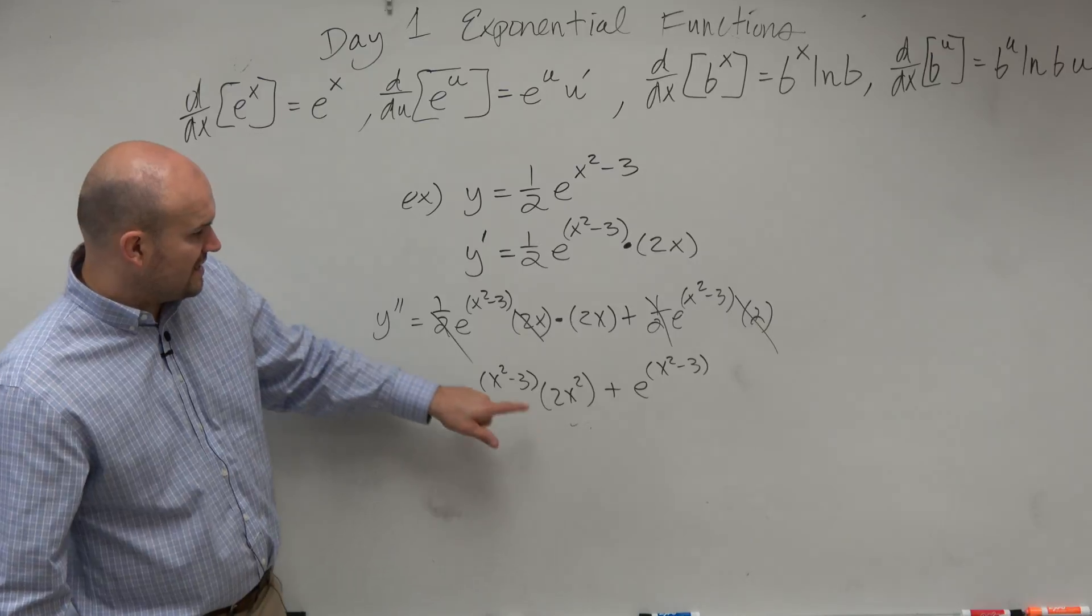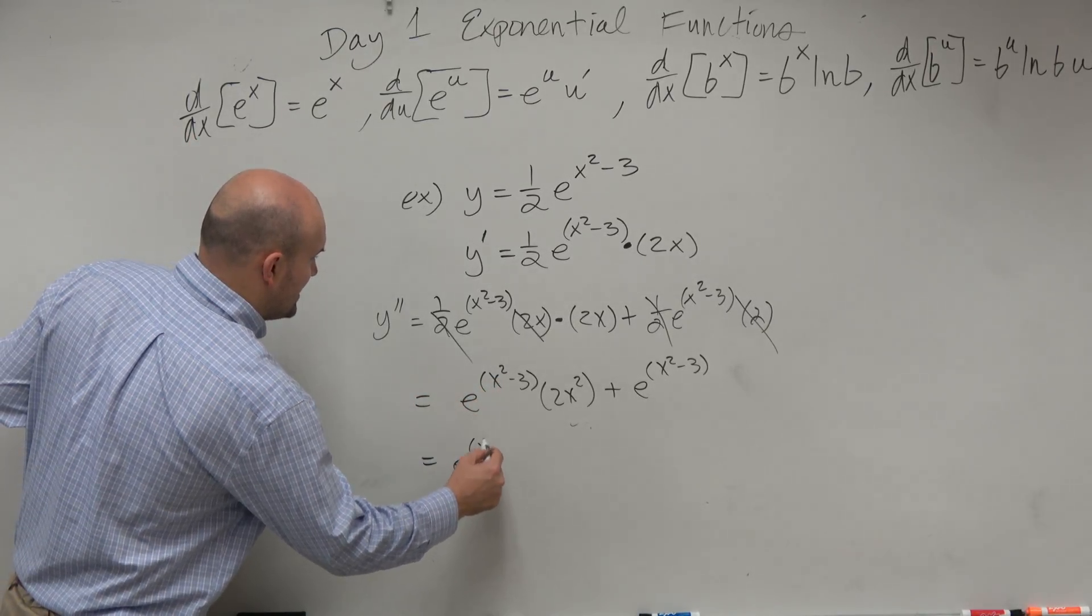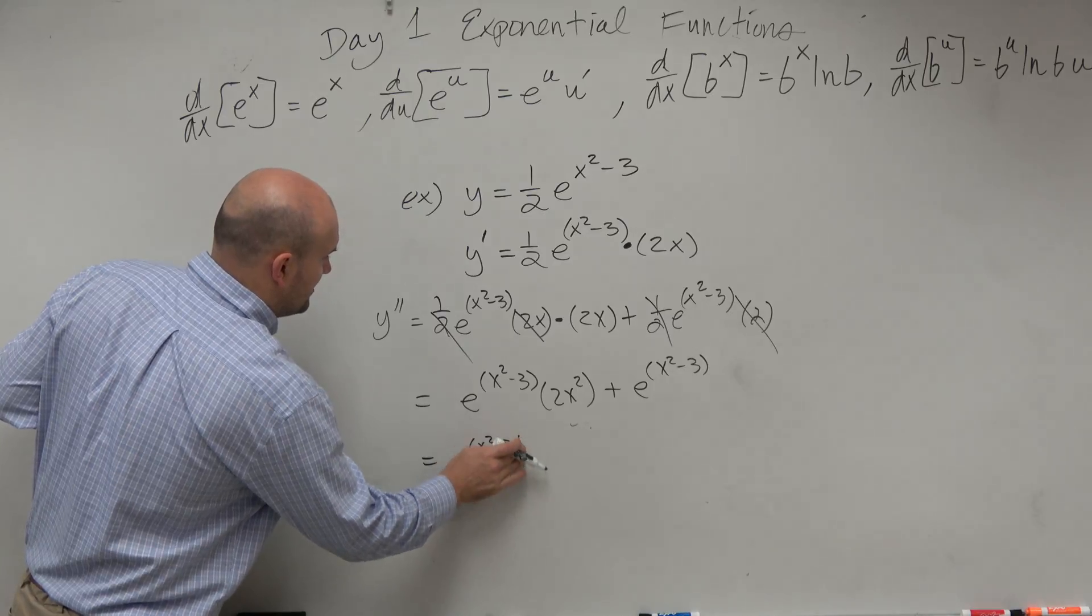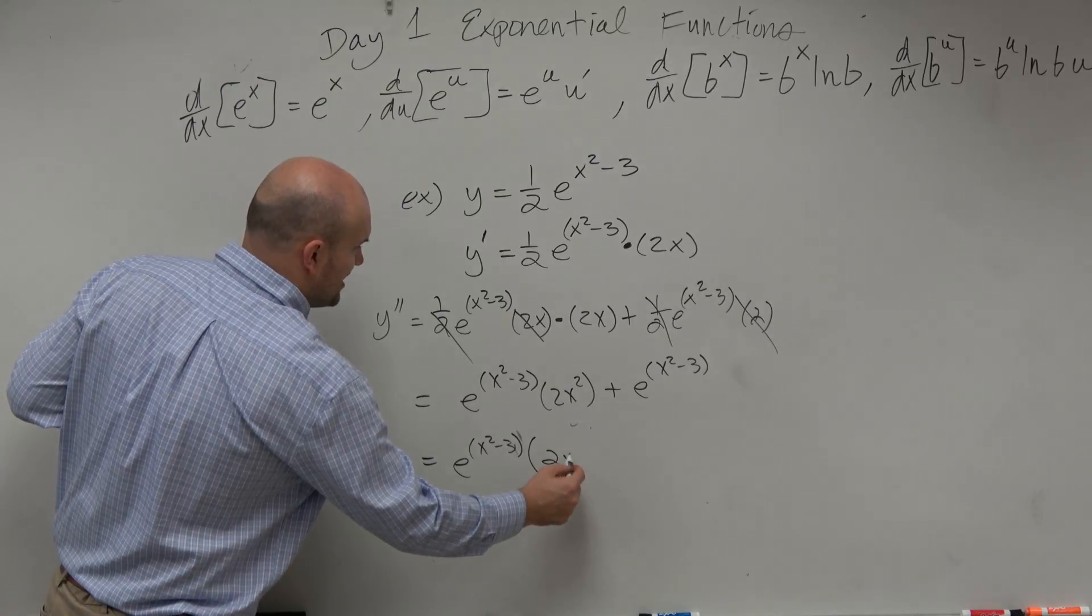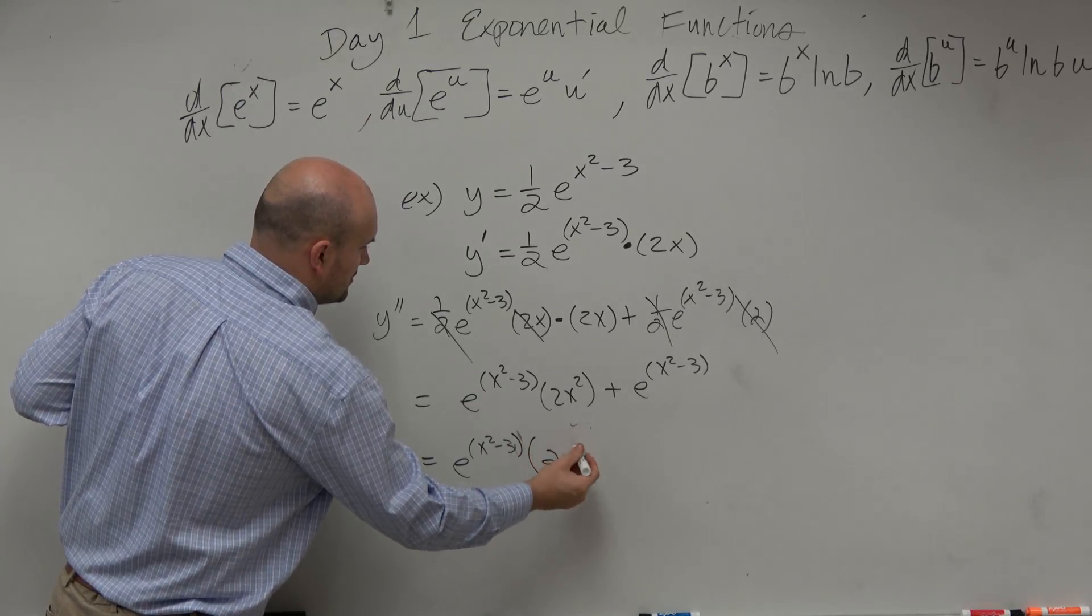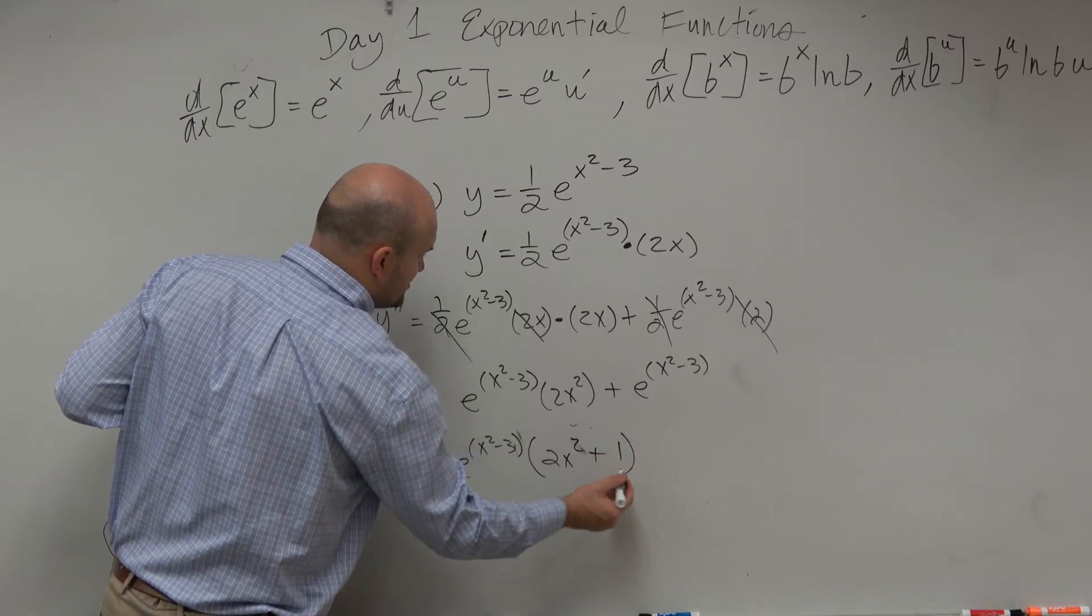Now we just see that they both have in common this, so I'm going to factor that out. e to the x squared minus 3. So what would be left over there would be a 2x squared. And then here, that's the exact same expression. That's the exact only term, so it would be plus 1.